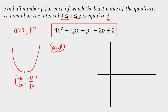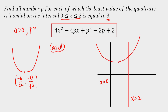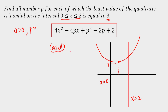Let's draw the x-axis and y-axis, with the line x = 2 and x = 0 which is the y-axis. The least value means the vertex of this quadratic equation lies here, at (-B/2A, -D/4A). So at some value of x, I'll get the least value as 3. The first condition is that the vertex should lie between 0 to 2, so -B/2A should be from 0 to 2.